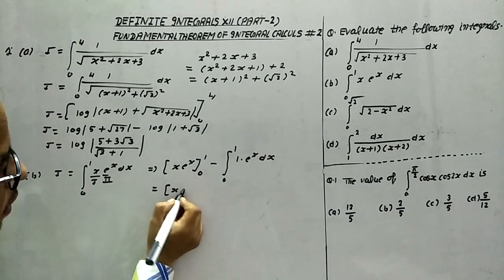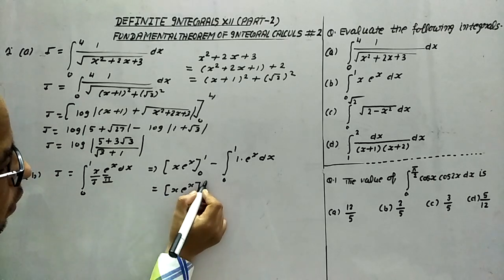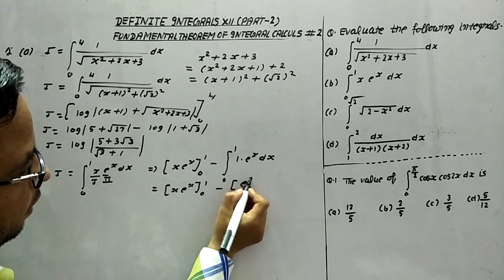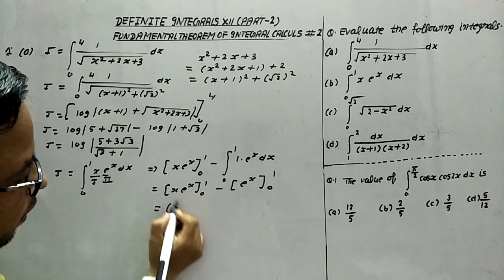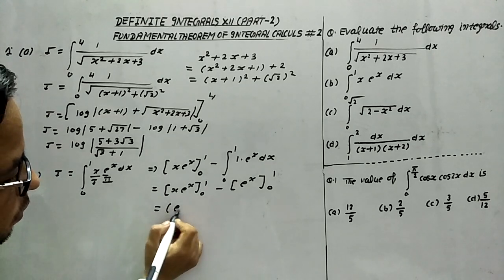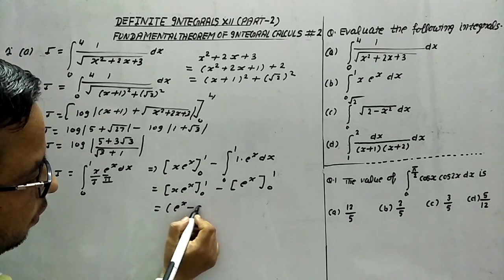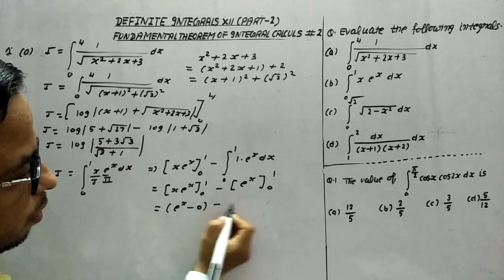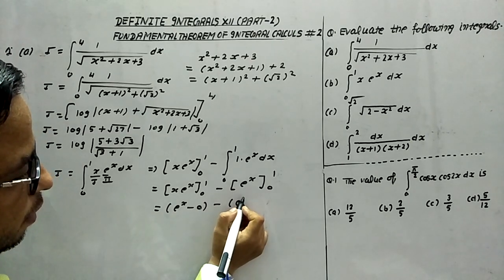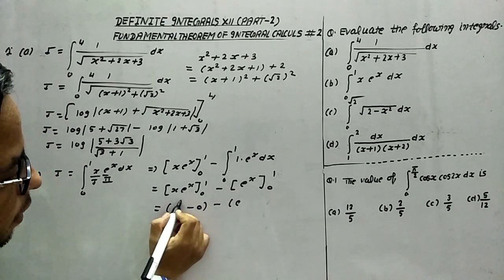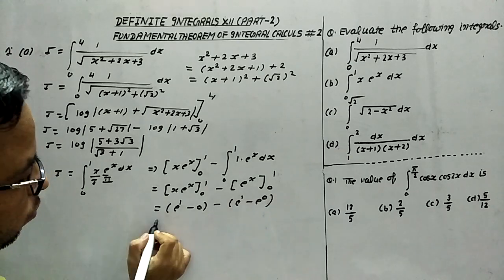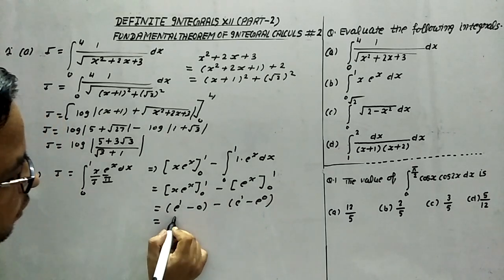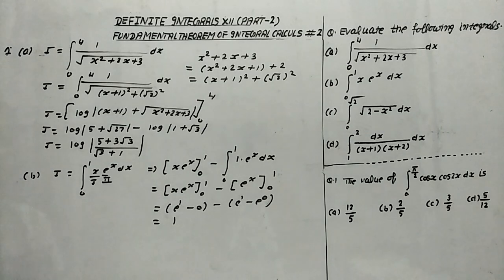This gives x·e^x from 0 to 1, minus e^x from 0 to 1. Applying the upper limit: 1·e^1, and lower limit: 0. Then minus (e^1 minus e^0). The terms cancel out, giving the answer as 1.